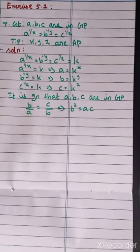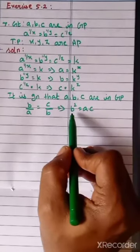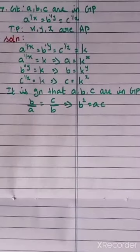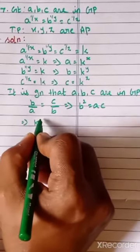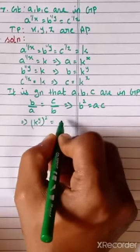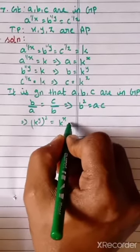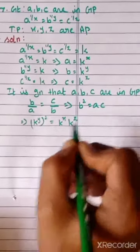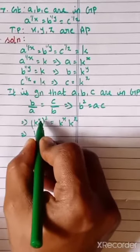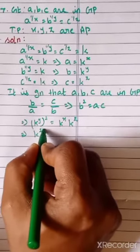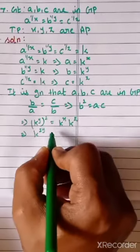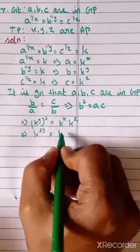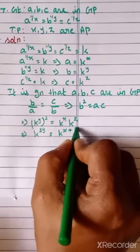Now we got the condition B squared equals AC. We know the values of A, B, C, so we can substitute here. B value is K power Y, so we can write K power Y whole square equals K power X times K power Z. We can write K power Y whole squared as K power 2Y. Since the bases are equal, we can add the powers on the right-hand side, giving K power X plus Z.